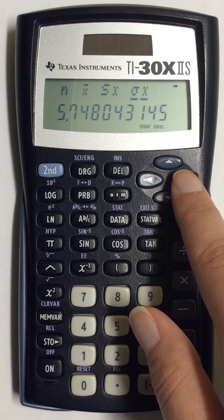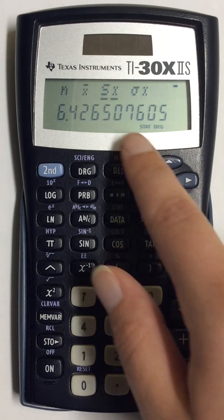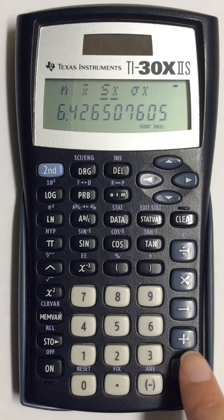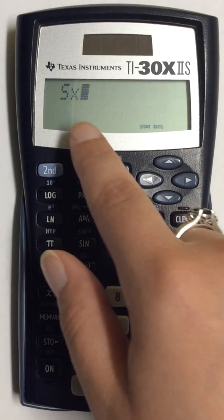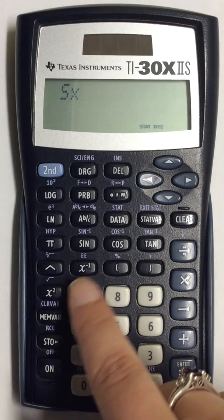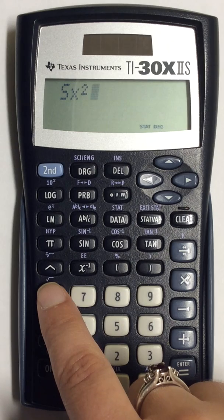To find variance all you have to do is make sure one is underlined and press equals. That will bring you to this screen where you can then square the standard deviation and that will give you variance.